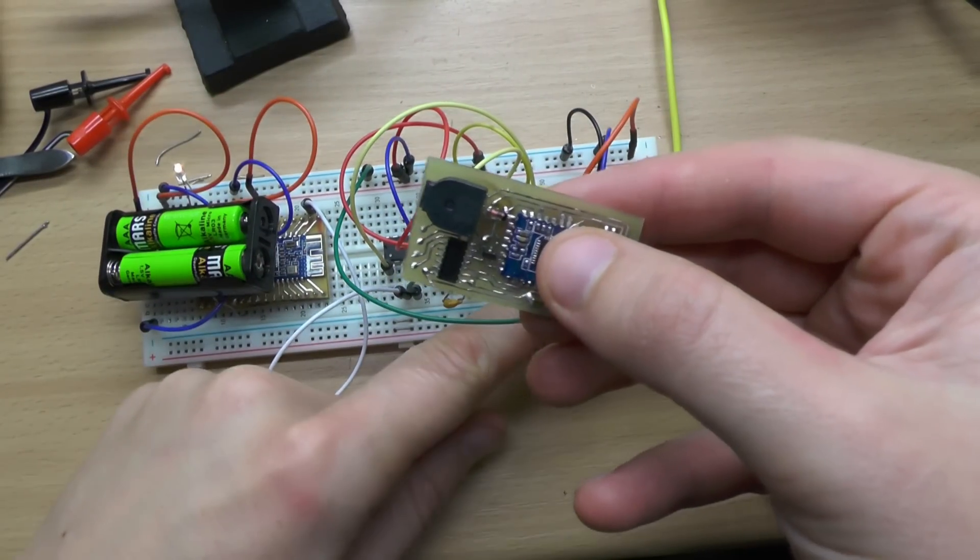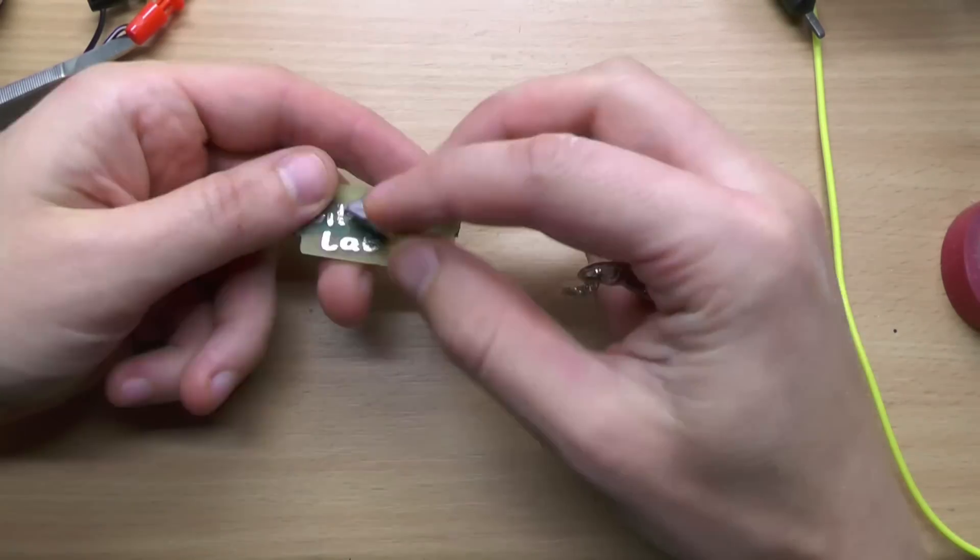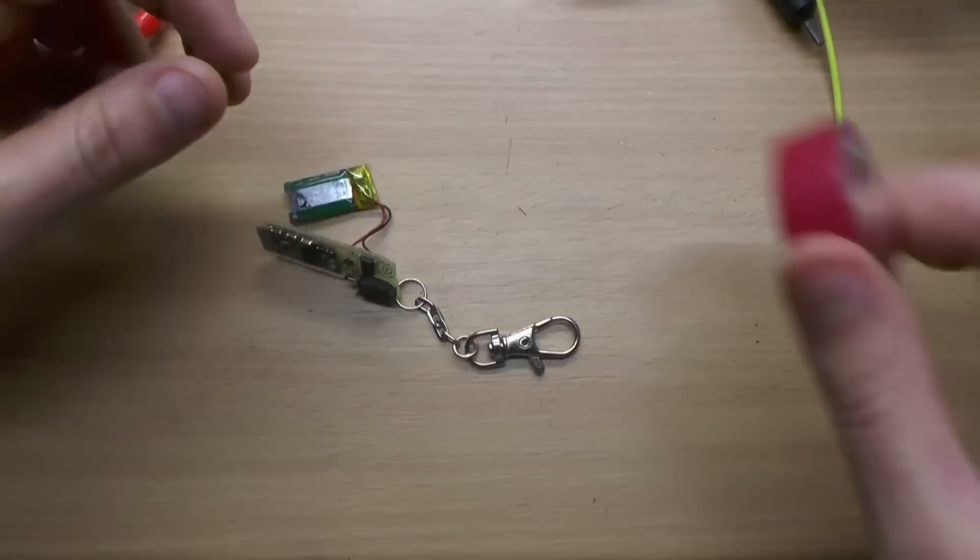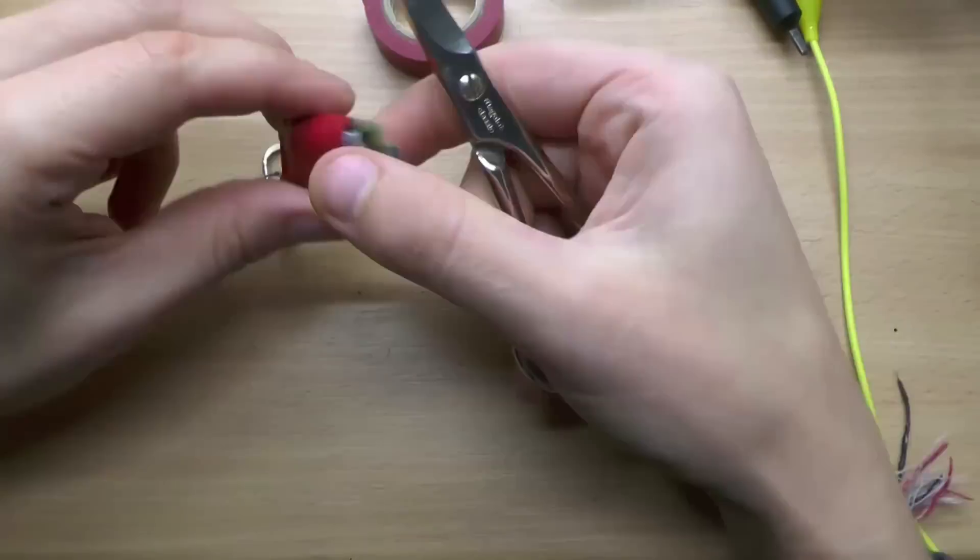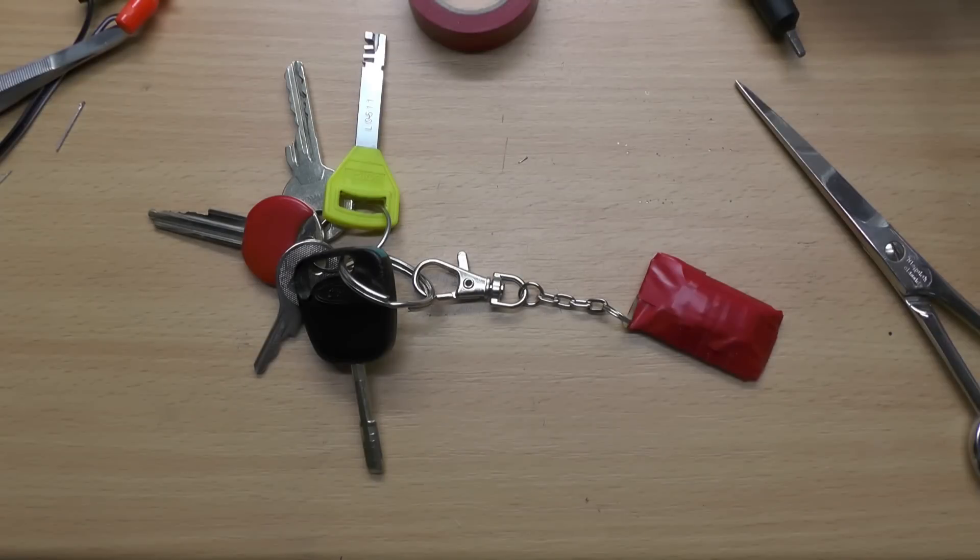I connected the battery, tested it, grinded off the excess PCB a bit and just wrapped it with some tape. And finished was the key fob.